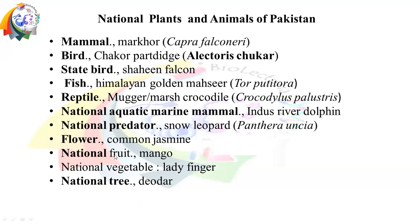The national flower is Common Jasmine. The national fruit is mango. The national vegetable is ladyfinger. And the national tree is Deodar cedar.